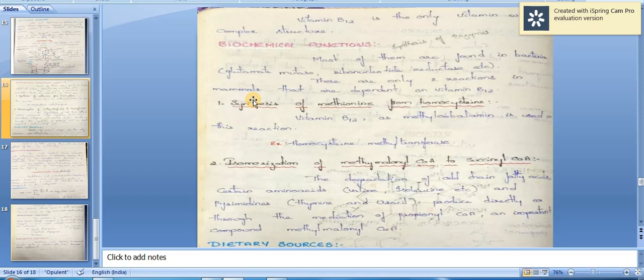Isomerization of methylmalonyl-CoA to succinyl-CoA: the degradation of odd-chain fatty acids, certain amino acids like valine and isoleucine, and pyrimidines like thymine and uracil produces directly or through the mediation of propionyl-CoA an important compound, methylmalonyl-CoA.